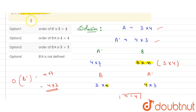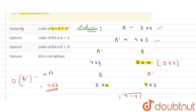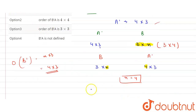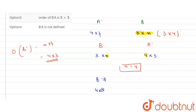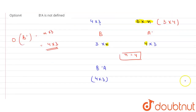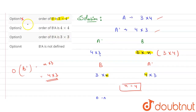Checking the options: Option 1 says order of B' is 3×4 — this is wrong, we calculated it is 4×3. Option 2 says order of B'A is 4×4 — B' is 4×3 and A is 3×4, so B'A gives order 4×4. This is correct. Option 3 says order of B' is 3×3 — wrong. Option 4 says B' is not defined — also wrong. So option 2 is the correct answer.